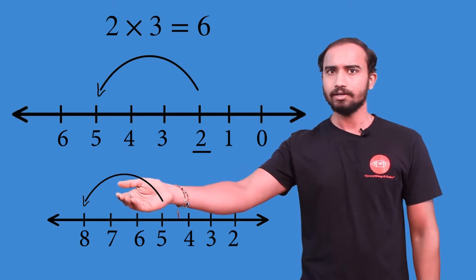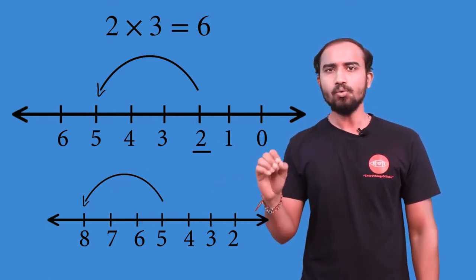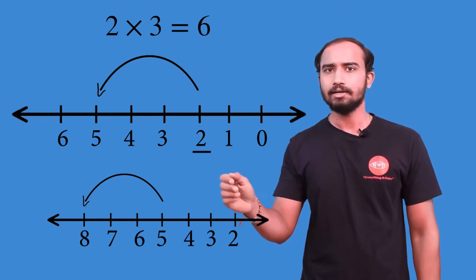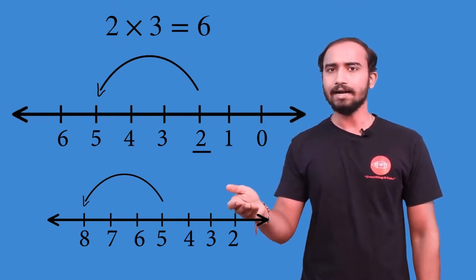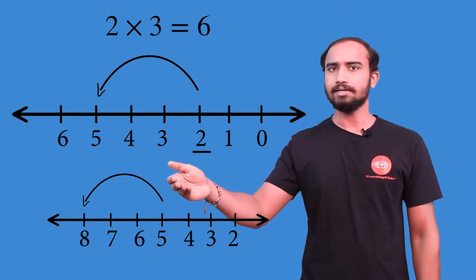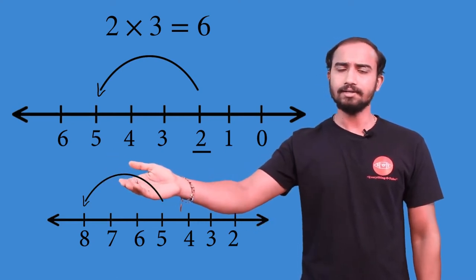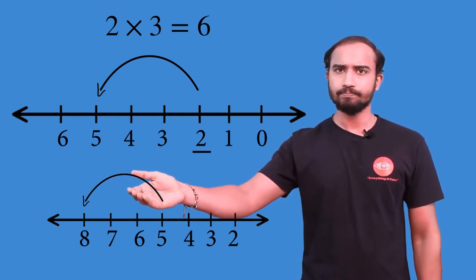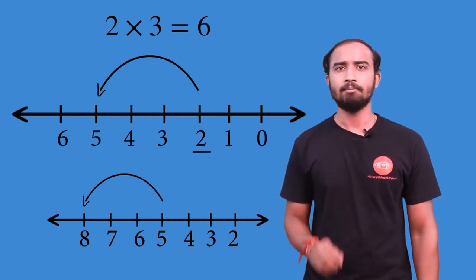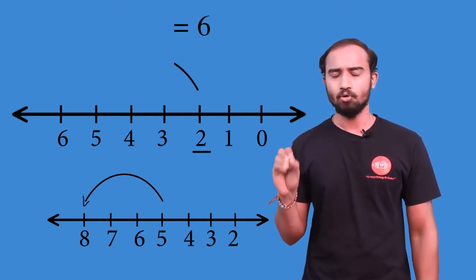So when you show 2 × 3 on the number line, it starts at number 2, the first jump takes us to number 5, and the second jump takes us to number 8. This is how we represent multiplication on the number line in whole numbers.